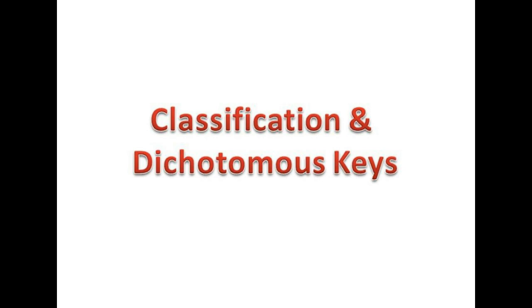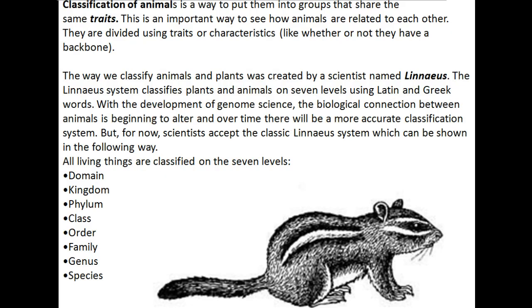So basically, classification is something you've been doing since you were little. But scientists take classification to the next level. Classification of animals — since that's what we're studying — is a way to put them into groups that share the same traits and how they relate to each other. This was all started by a scientist named Linnaeus, L-I-N-N-A-E-U-S.